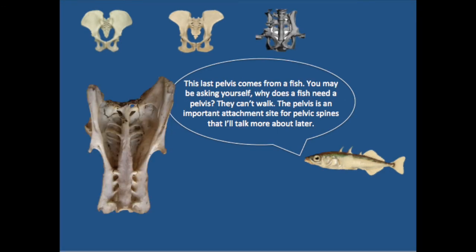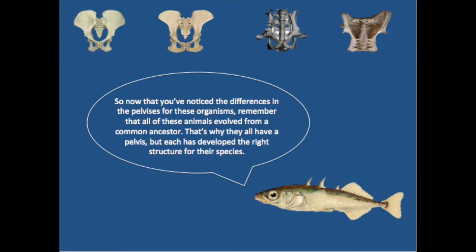This last pelvis comes from a fish. You may be asking yourself, why does a fish need a pelvis? They can't walk. The pelvis is an important attachment site for pelvic spines that I'll talk more about later. So now that you've noticed the differences in the pelvices for these organisms, remember that all of these animals evolved from a common ancestor. That's why they all have a pelvis, but each has developed the right structure for their species.